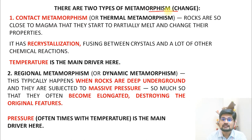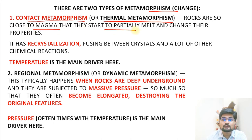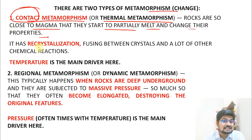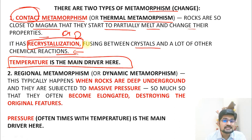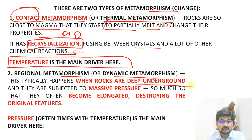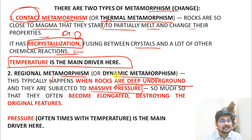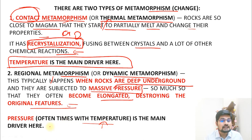There are two types of metamorphism. Contact metamorphism, also known as thermal metamorphism, occurs when rocks are so close to magma that they start to partially melt and change their properties. Recrystallization, fusion between crystals, and chemical reactions occur — temperature is the main factor. Regional metamorphism or dynamic metamorphism occurs when rocks deep underground are subjected to massive pressure, destroying original rock features.